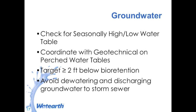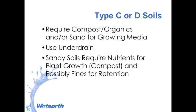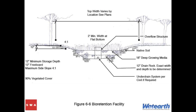You may have local criteria for distances to seasonally high groundwater. If you don't, target at least two feet below the bottom of the bioretention feature — the bottom of the drain rock layer. The reason you want at least two feet is that pollutants may migrate up to about 18 inches, so you want a buffer. Check for seasonally high groundwater and Type C or D soils. Generally in bioretention you'll use a growing media; clay soils will require an underdrain. You don't want to overcompact the native soil during construction or use the system as a sediment trap.